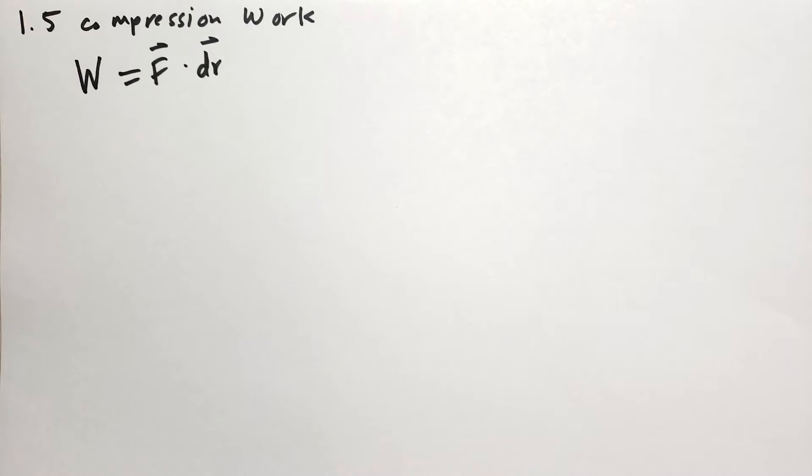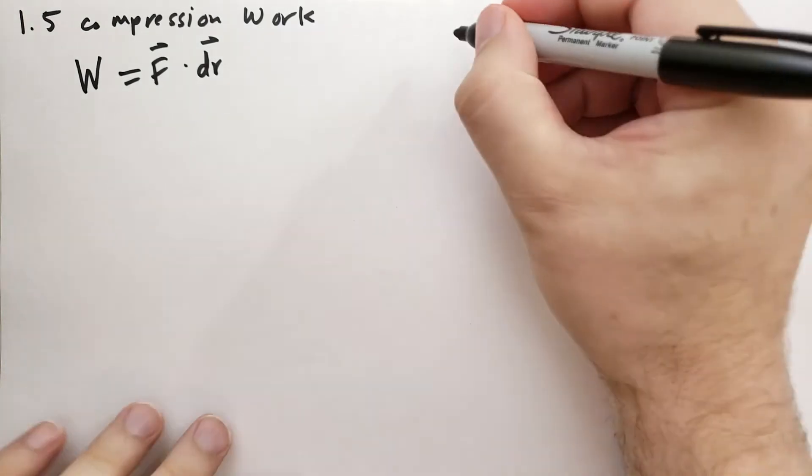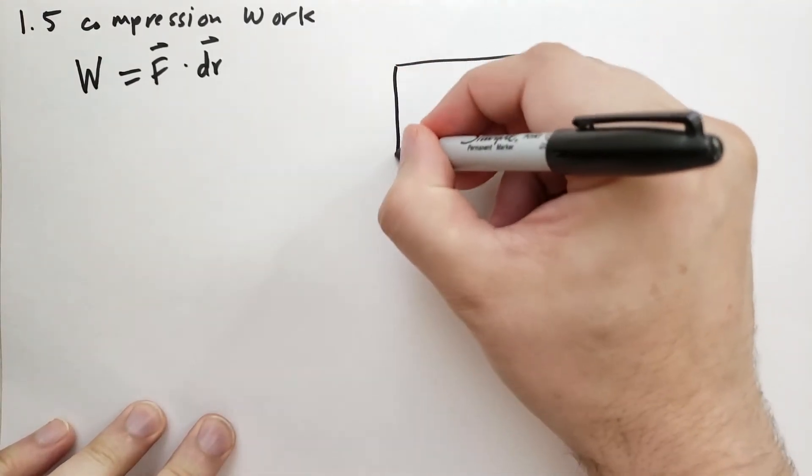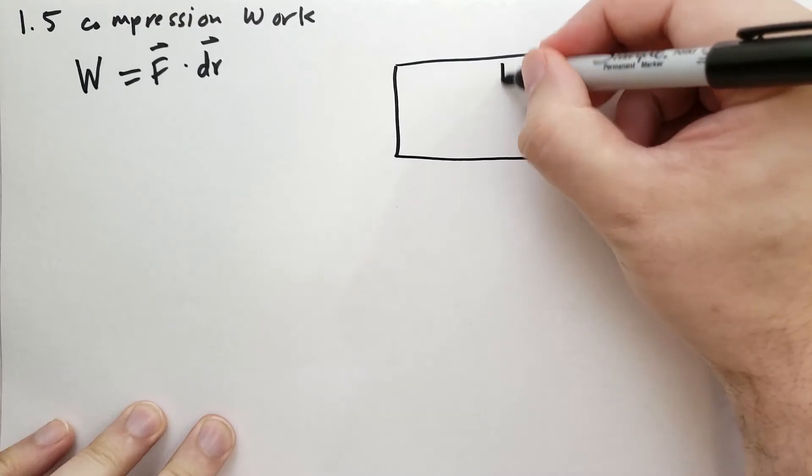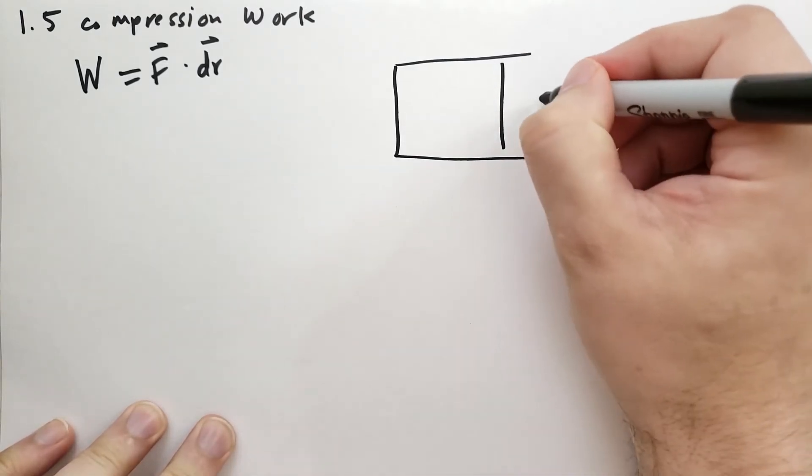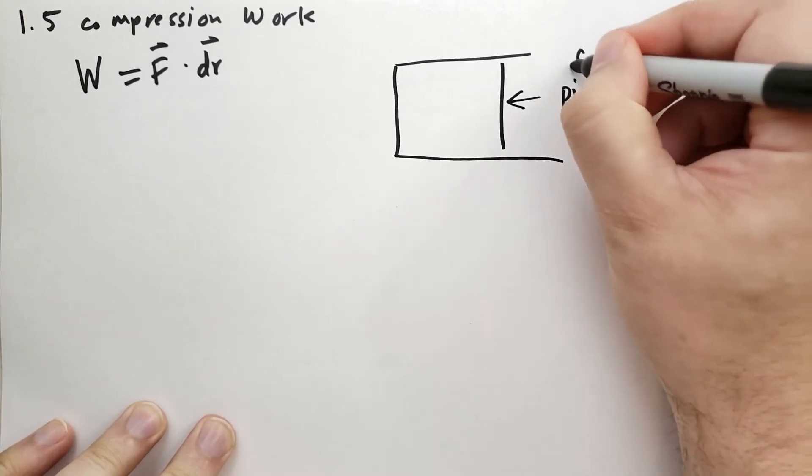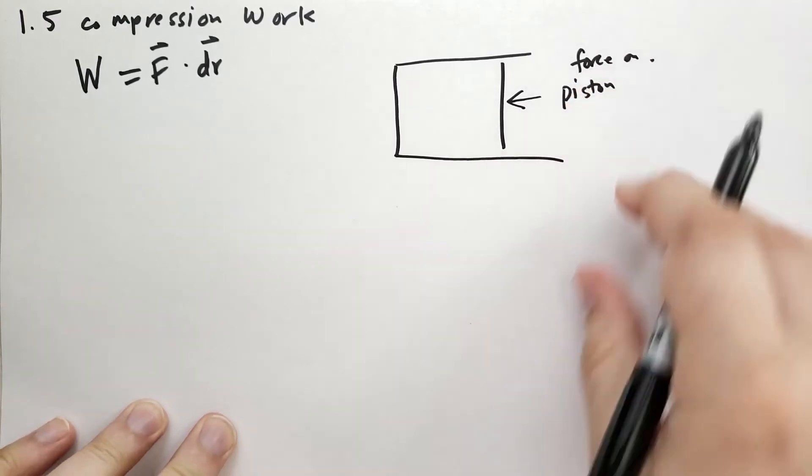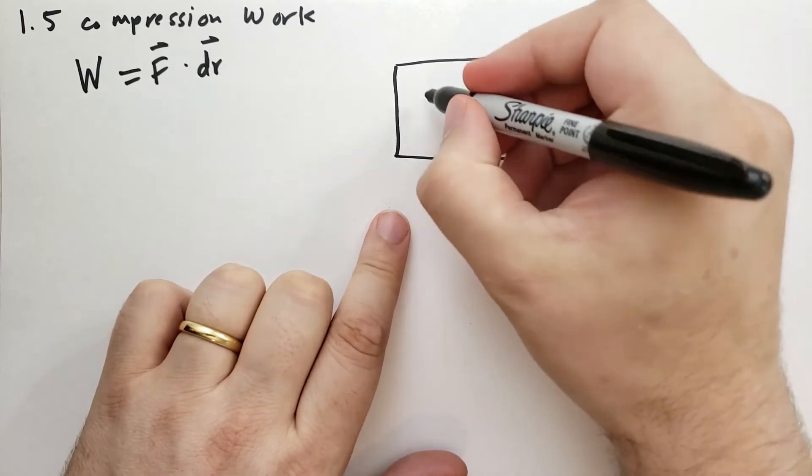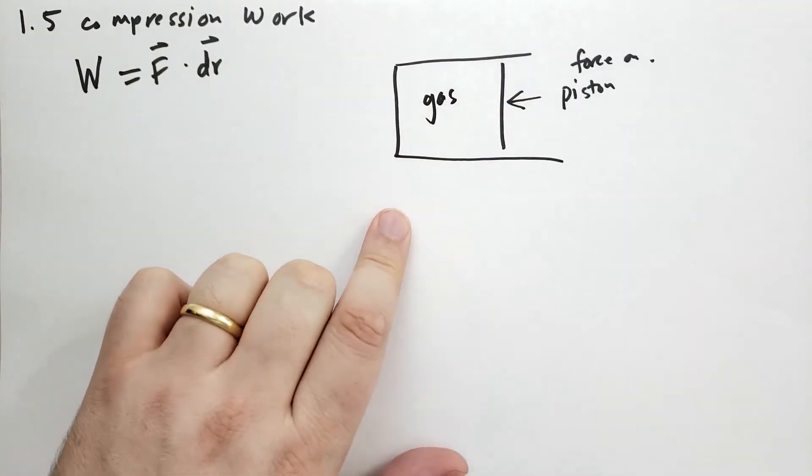And the way he resolves this problem is first of all, he says, we're going to have a piston. So we're going to have a cylinder and then we're going to have a piston here and we're going to apply a force to that piston and it will change the volume of the gas inside and the pressure.